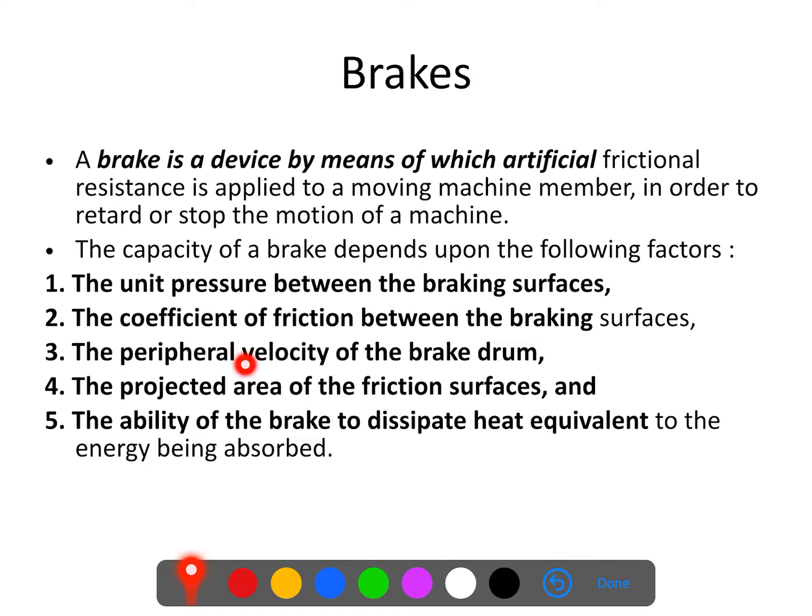The projected area of the friction surfaces is also important — for greater braking action we need a larger area. Then, the ability of the brake to dissipate heat equivalent to the energy being absorbed is critical. Whenever we apply the brakes, kinetic energy is converted into heat, and that heat must be dissipated; otherwise the brake material will start heating up and lose its mechanical properties. Heat dissipation rate is therefore a very important parameter in deciding brake capacity.